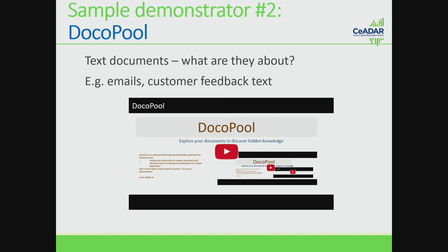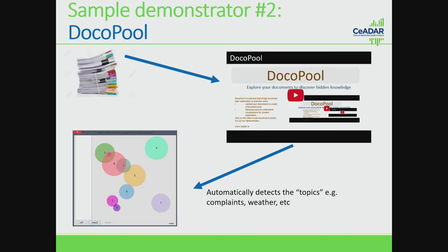The second demonstrator is called Docker Pool — a tool that focuses on analyzing text. Imagine you're a company with many text documents, such as customer emails or descriptions of claims, but you don't really know what's in them. Docker Pool allows you to load in all the text documents, and it will automatically slice up your documents and figure out what the topics are. Looking at the bottom left, the topics are shown as various circles — telling you, for example, that this group is about asbestos claims, and that group is about something else — all done automatically through the algorithms applied.